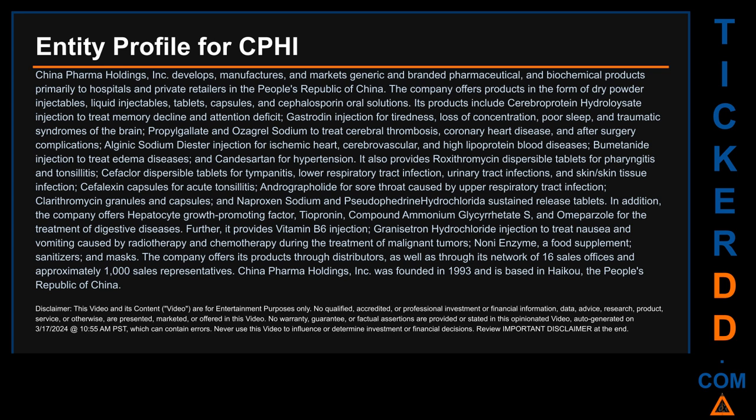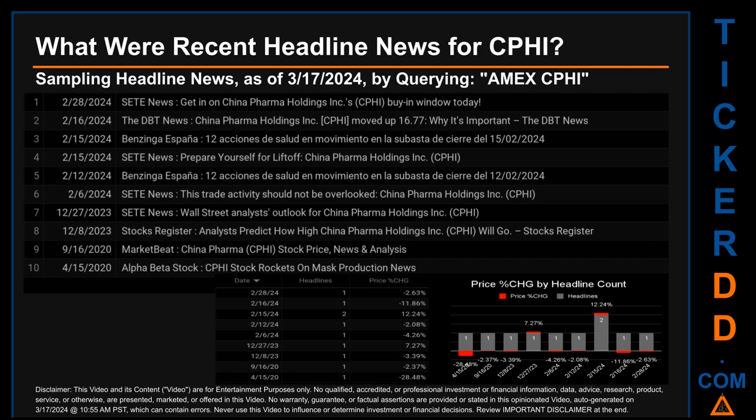China Pharma Holdings Inc. was founded in 1993 and is based in Haikou, the People's Republic of China. Today, Sunday, March 17, 2024, I sampled one of our news aggregators for the latest headlines for this ticker. I searched by a keyword that may appear broadly in the title or body of discoverable news articles. The keyword used was a combination of the exchange and ticker symbol: AMEX CPHI. The results showed 10 unique headlines published across nine unique dates.